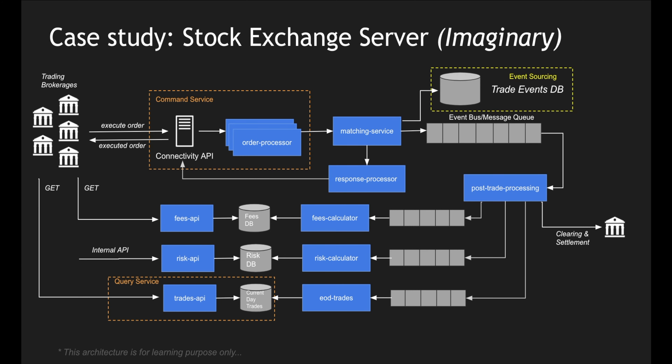Now let's look at the case study for a stock exchange server. We saw an imaginary architecture with a complicated microservices environment having multiple databases, sources, APIs, queues, and messages. I'm going to pick only three of them: fees, risk, and current day trades. Trade events represent complete event sourcing, and those messages get converted into specific formats — fee-specific, risk-specific, and trade-specific messages.